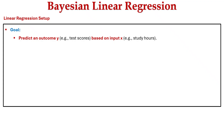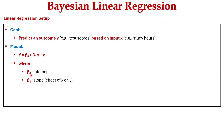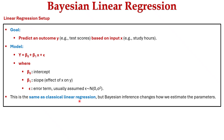Let's consider the linear regression setup with the goal of predicting an outcome y based on the input x. The model is y = β₀ + β₁x + ε, where β₀ is the intercept and β₁ is the slope — that is, the effect of x on y — and ε is an error term distributed as a normal distribution with mean 0 and variance σ². This is the same as classical linear regression, but Bayesian inference changes how we estimate the parameters.